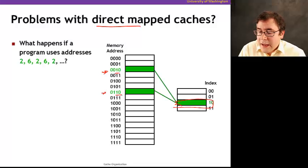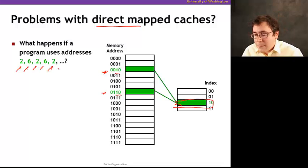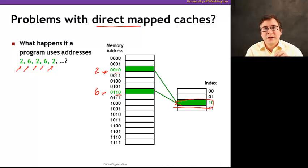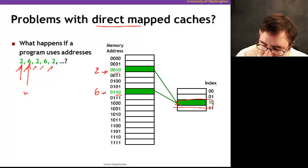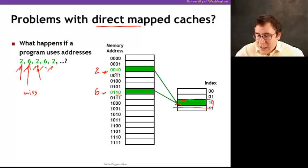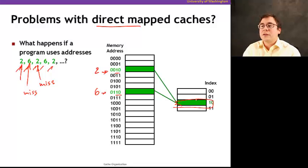What's the problem with direct mapping? If I access addresses 2, 6, 2, 6, 2 repeatedly, addresses 2 and 6 map to the same position in the cache. When I access 2, I put it in the cache. When I access 6, it's a miss, and it kicks 2 out. When I access 2 again, it's a miss because 6 kicked it out. All of these accesses end up being misses even though I'm only using one position in the cache. This is called a cache conflict — the two locations kick each other out repeatedly.